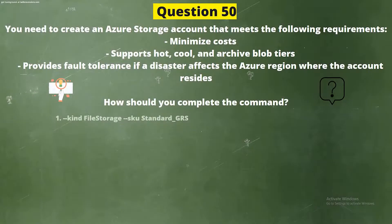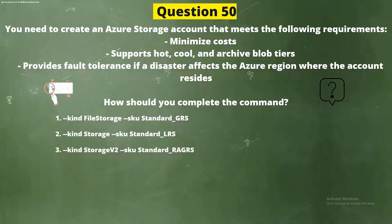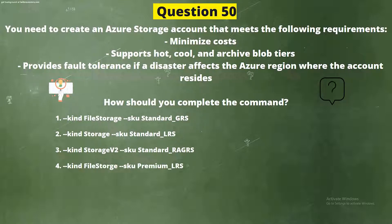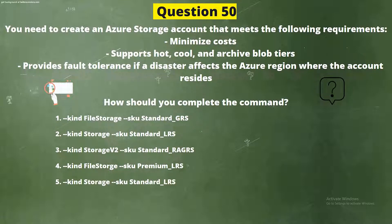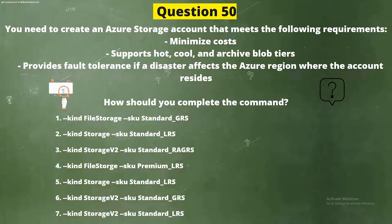The options are: Number 1, Kind File Storage, SKU Standard GRS; Number 2, Kind Storage, SKU Standard LRS; Number 3, Kind Storage V2, SKU Standard RAGRS; Number 4, Kind File Storage, SKU Premium LRS; Number 5, Kind Storage, SKU Standard LRS; Number 6, Kind Storage V2, SKU Standard GRS; Number 7, Kind Storage V2, SKU Standard LRS.